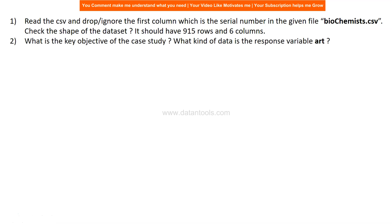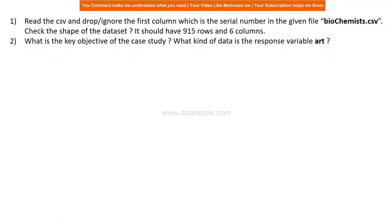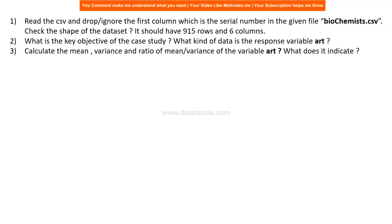You need to identify the key objective of the case study and what kind of data is in the response variable 'art'. There can be different types of case studies — prediction, classification, segmentation — so clearly articulate the problem statement and understand it through the type of data in the target variable. Then calculate the mean, variance, and ratio of mean to variance, and write your observations about what it indicates.